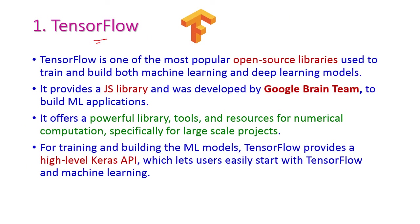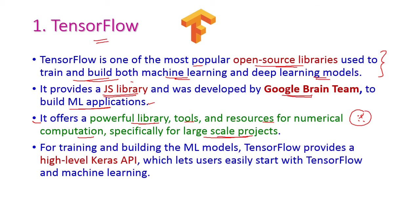The first one is TensorFlow. This is one of the most popular open source libraries used to train and build both machine learning and deep learning models. It is a JS library developed by the Google Brain team especially to build machine learning applications. It offers powerful library tools and resources for numerical computation, especially for large-scale projects. TensorFlow provides a high-level Keras API which allows users to easily start with TensorFlow and machine learning algorithms.